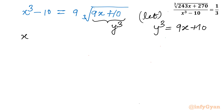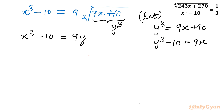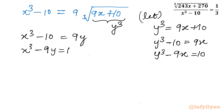Now I will write our equation: x³ - 10 = 9y, since cube root of y³ is y. Rearranging, we get x³ - 9y = 10. Similarly, from y³ = 9x + 10, we get y³ - 9x = 10. So we now have the system: x³ - 9y = 10 and y³ - 9x = 10.